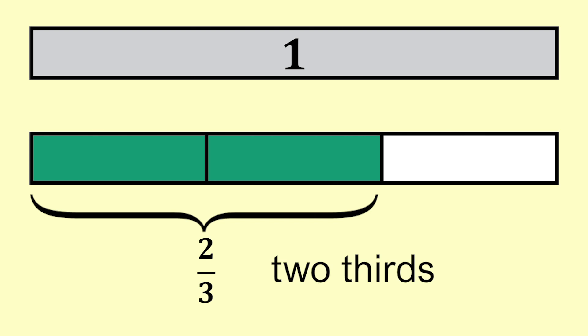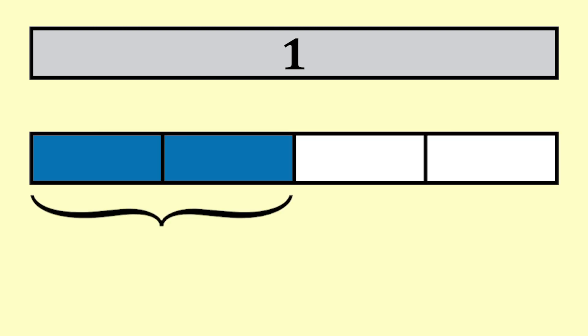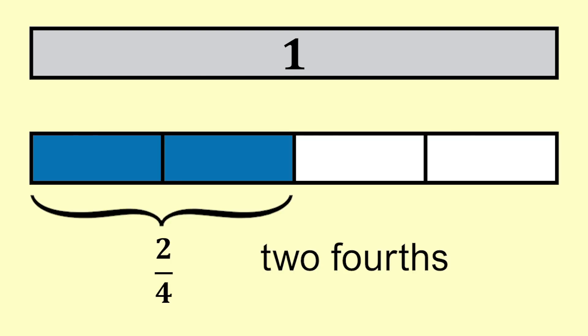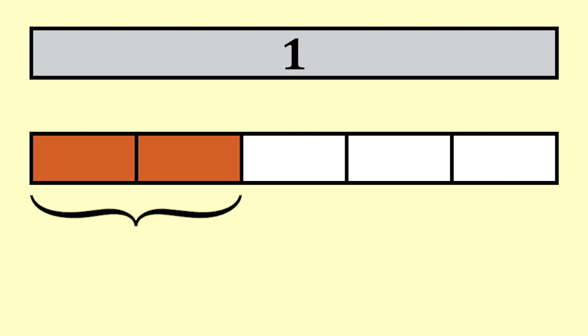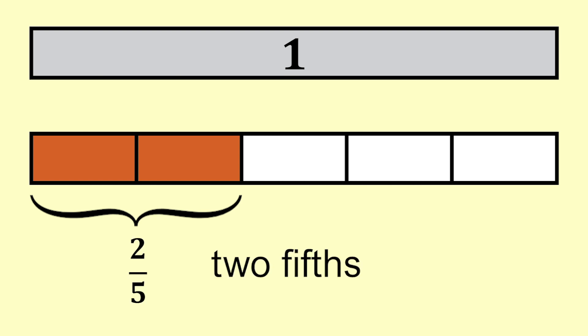Two out of three is two thirds. Two out of four is two fourths or two quarters. Two out of five is two fifths.